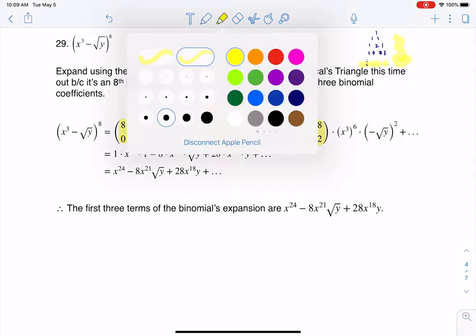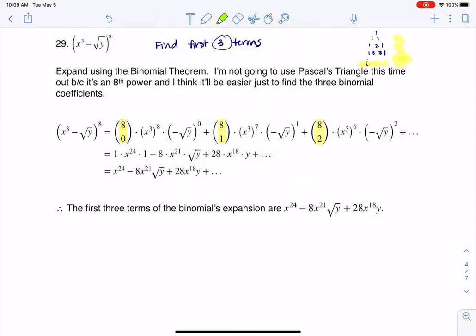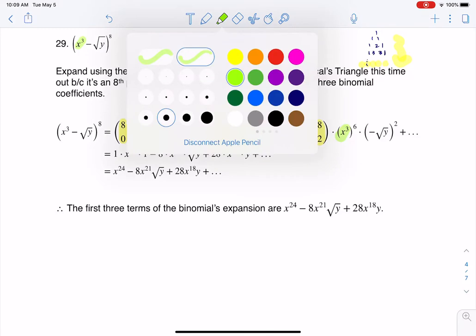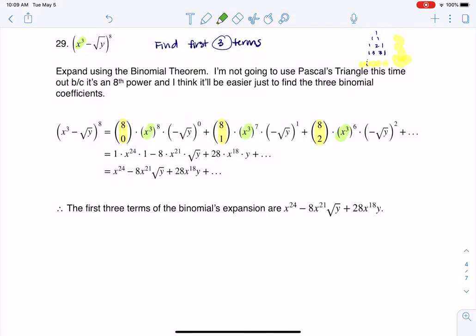The next thing I need to do is look at the first term in my binomial expansion, x cubed. I need to put x cubed in every term of my binomial expansion, but I need to adjust the exponents. I start with 8, then head down to 7, then down to 6.